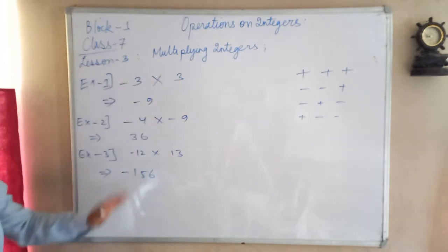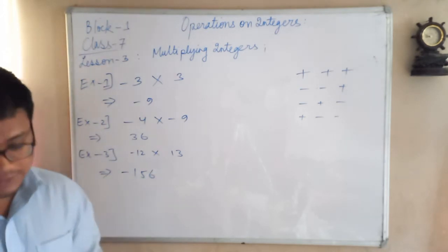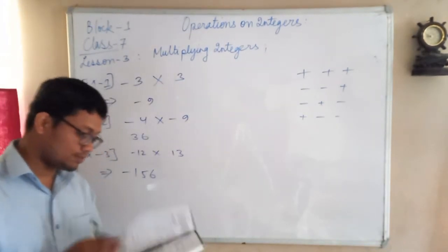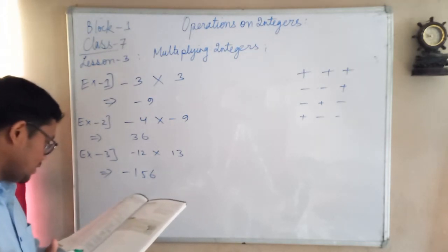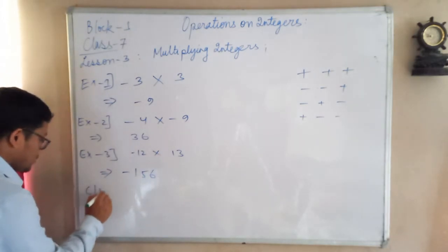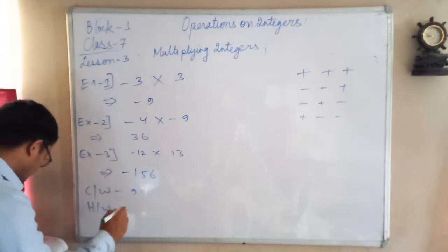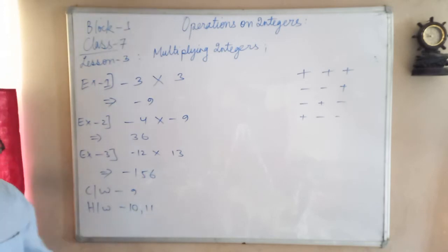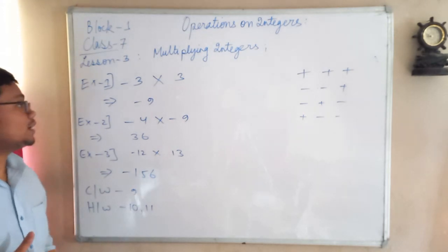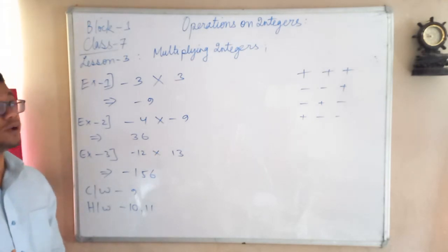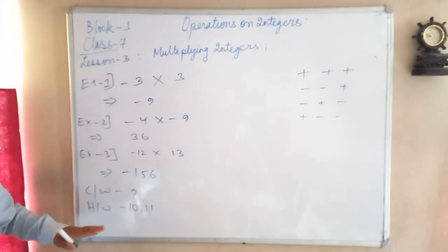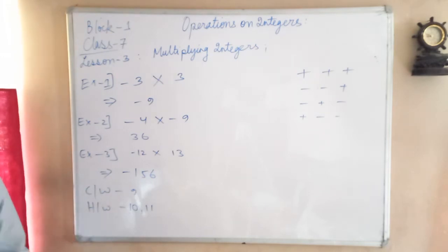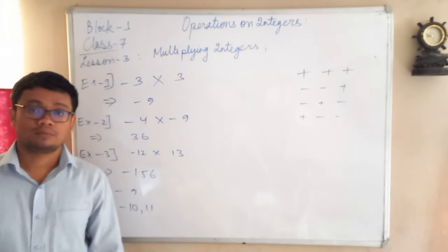Now you have understood the concept. From this part, I am giving you classwork and homework. As your classwork you have to do question number 9, and as your homework you have to do question numbers 10 and 11. From the fourth part of the lesson we are going to learn about integers story problems. Please copy the notes and do your classwork and homework and show me in the WhatsApp group as soon as possible.